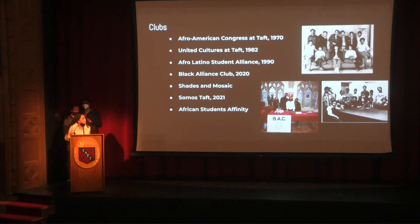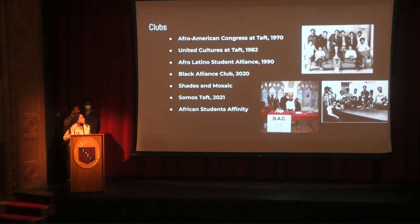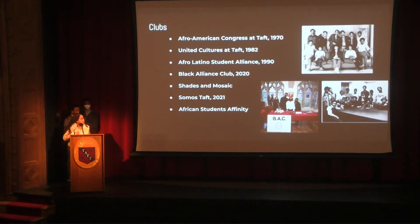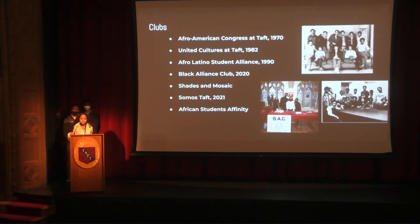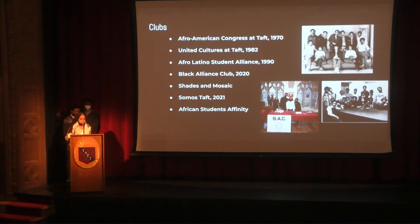Next we're going to look at some clubs that highlight the black experience at Taft. We have the Afro-American Congress at Taft, which was the first club that highlighted the black experience, created in 1970. Next we have UCT, or United Cultures at Taft, created in 1982, one of the oldest clubs here at Taft, still around today. Next, the Afro-Latino Student Alliance, created in 1990. The Black Alliance Club, created in 2020. Shades and Mosaics evolved from the Afro-American Congress at Taft. And then we have Somos Taft, created in 2021, and African Students Affinity. These clubs and affinity groups are created not only to highlight the black experience for non-black students here at Taft, but also to affirm and validate those students' feelings who are a part of those groups.